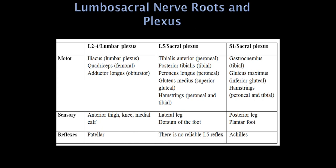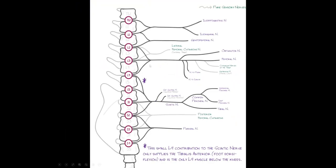Moving to the lower extremities: we'll lump L2-L3-L4 nerve roots with the lumbar plexus, and L5-S1 with the sacral plexus. We can see L2-L3-L4 roots becoming the lumbar plexus, off which come the femoral nerve, the obturator nerve, and the lateral femoral cutaneous nerve — an important pure sensory branch.